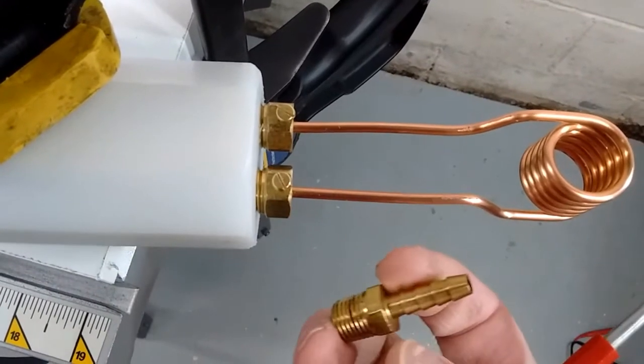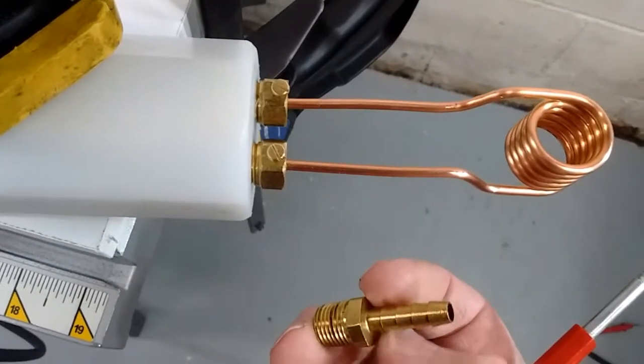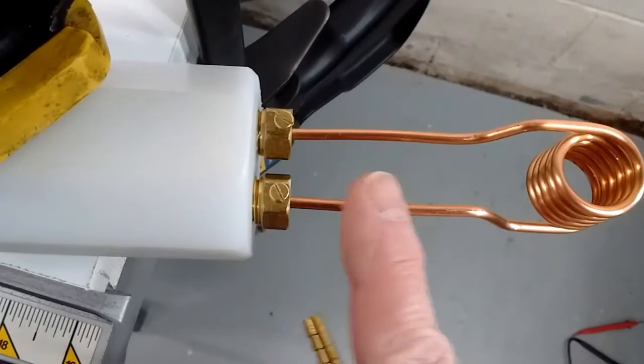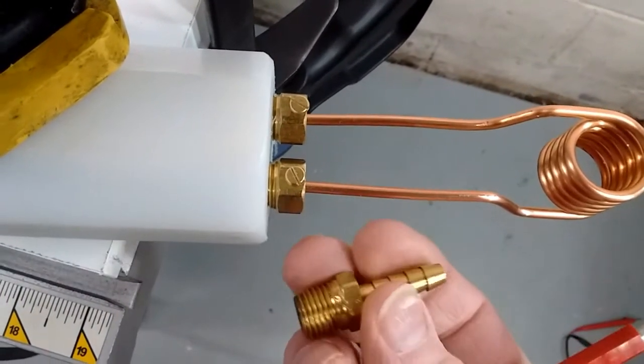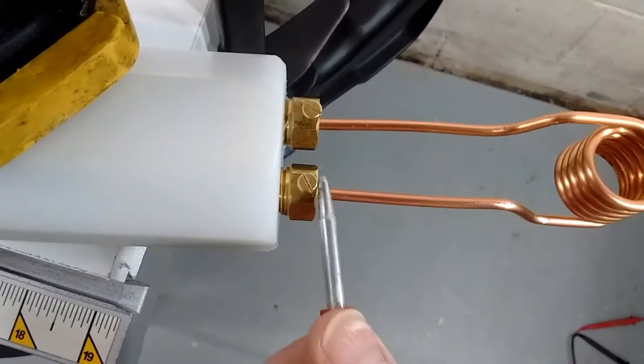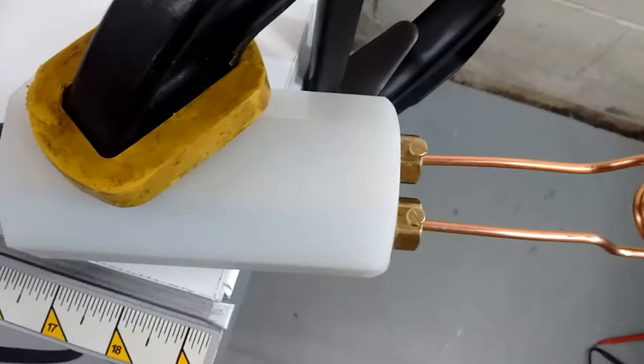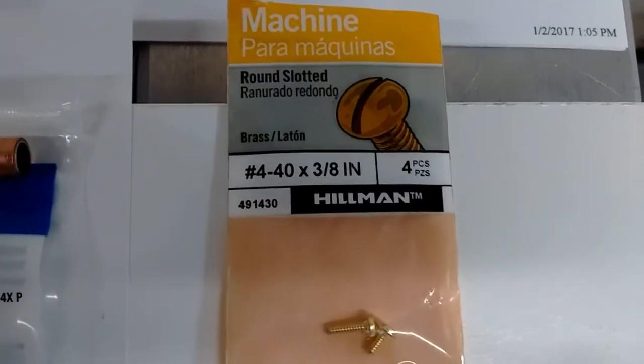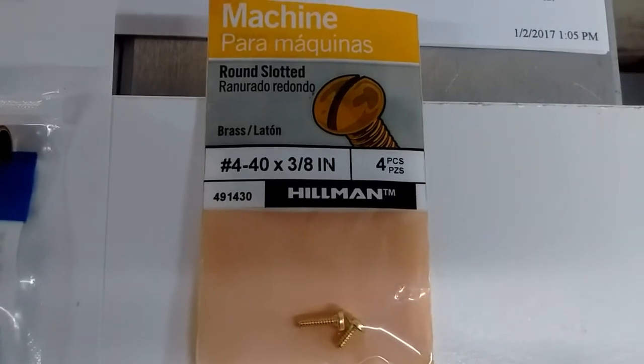Then drill the hole out in the center to the size of this wire. You have to drill a hole from the side on one of these flats and put in this screw. You have to thread it - it's a 440 by 3/8 brass and these are available at Lowe's.